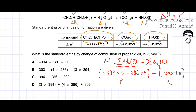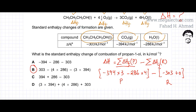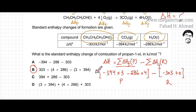So we have enthalpy of formation of products minus the enthalpy of formation of reactants. Notice that the minus sign combined with minus 303 changes into a plus 303. Looking at the options carefully, the correct expression is option B, because it has plus 303, minus 4 × 286, and minus 3 × 394 — which exactly matches the expression written. So option B is the correct answer.